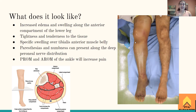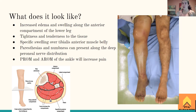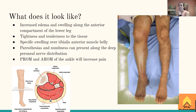Specifically, the swelling is most pronounced over the tibialis anterior muscle belly because that takes up the most space in the anterior compartment. You'll have paresthesias — numbness, tingling, and weakness — along the deep peroneal nerve distribution. The main nerve affected in anterior compartment syndrome is the deep peroneal nerve, also called the fibular nerve, which innervates all the muscles on the anterior portion of the leg.